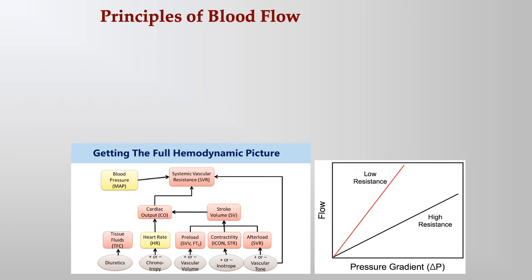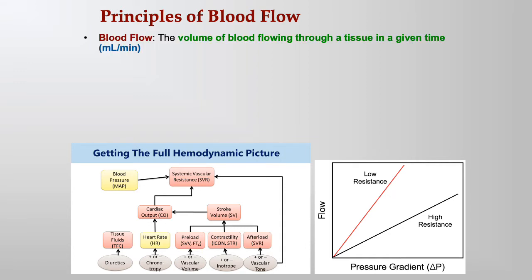We've talked about blood vessels. Now let's start talking about blood flowing through those blood vessels — blood flow. Blood flow is the volume of blood flowing through a tissue in a given time, measured in milliliters per minute, just like cardiac output. Blood is the delivery system of your body; the most important job of blood is to bring nutrients to the tissues and carry waste products away.